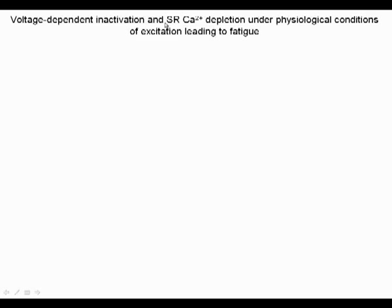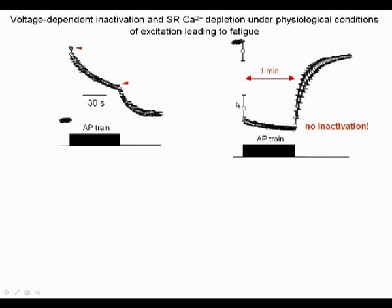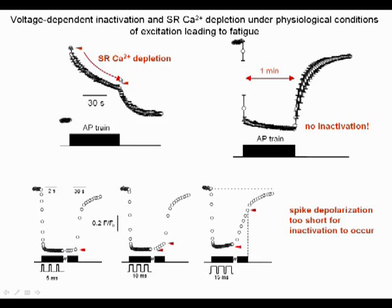We can now question whether depletion predominates under physiological conditions of excitation, that is when calcium release is induced by trains of action potentials. As shown before, cytosolic calcium signals decline during a one-minute continuous stimulation. But amazingly, when measuring SR calcium, we found that trains of action potentials induce depletion but no inactivation at all during the one-minute stimulation. This suggests that the decline in the cytosolic calcium signal only results from depletion and not from inactivation. This series of voltage clamp experiments indicates that, if inactivation does not occur, it is likely because spike depolarization is too short during an action potential for inactivation to be turned on.